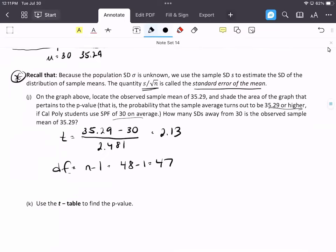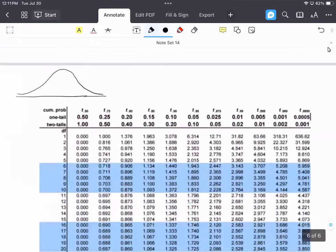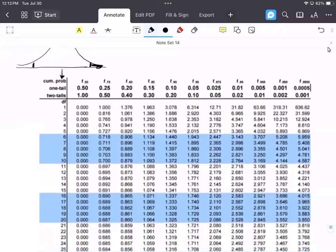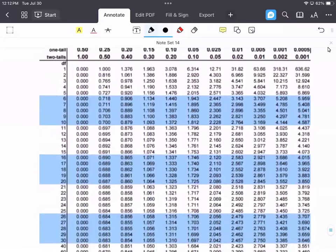Now we want to use the t-table to find the p-value. A one-sided test looks in one tail, a two-sided test looks in both tails. For the degrees of freedom, you want to find the closest we have in this column. To be conservative, we round down. We don't have 47, but we do have 40, so we're going to look at 40.